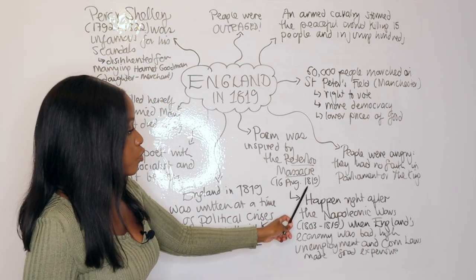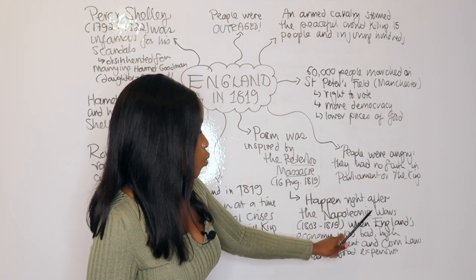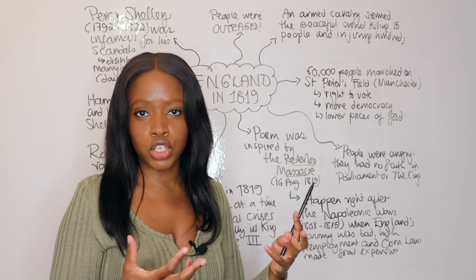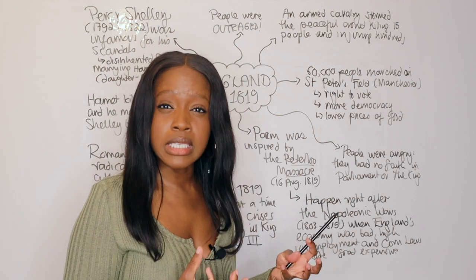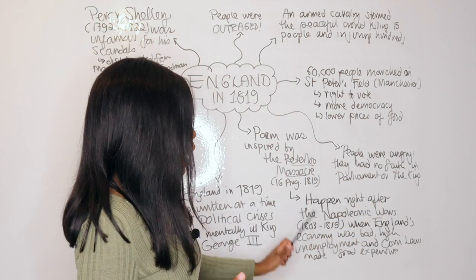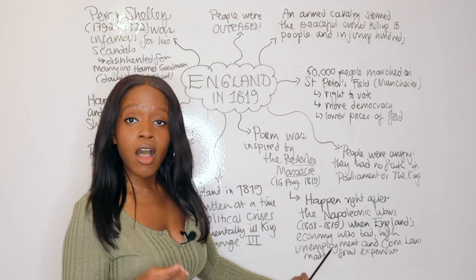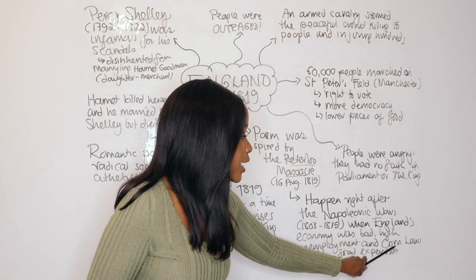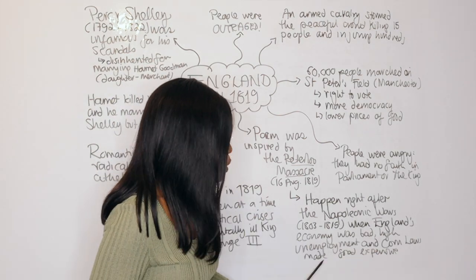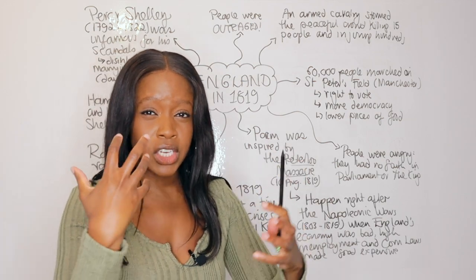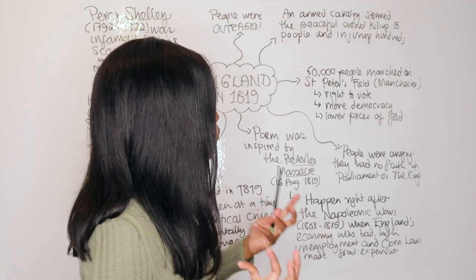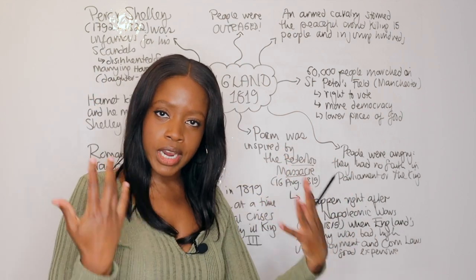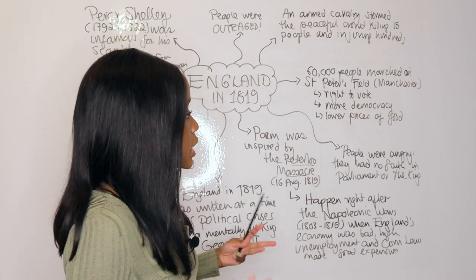The Peterloo Massacre occurred on the 16th of August, after the Napoleonic Wars of 1803 to 1815 — a series of wars between England and France. These wars left Britain economically quite unstable, having spent enormous amounts of money on them. Because England's economy was bad, there was a lot of high unemployment. Regular people couldn't support themselves with jobs. There were also corn laws passed which made food expensive. During this time in 1819, there was basically a perfect storm brewing. People were understandably quite enraged — peasants, working class people, everyday people — who wanted to see change. They wanted parliament to change.